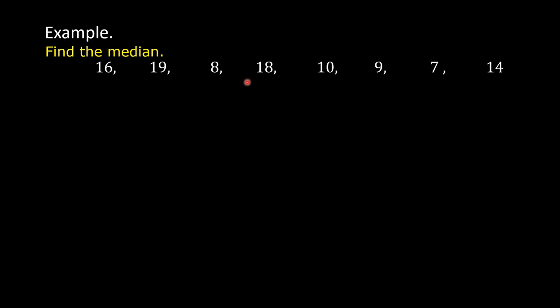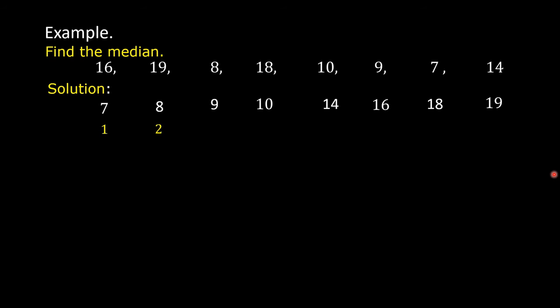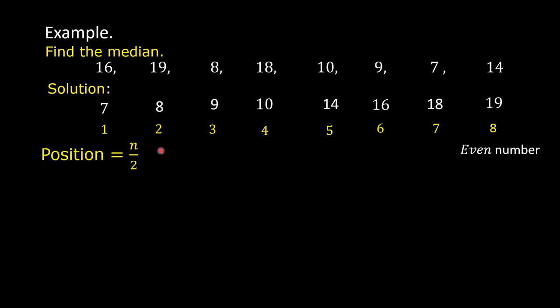Next example: find the median of 16, 19, 8, 18, 10, 9, 7, and 14. Solution: arrange the data in ascending order — 7, 8, 9, 10, 14, 16, 18, 19. Count the data: 1, 2, 3, 4, 5, 6, 7, 8. There are 8 values, which is an even number. Use the formula: position = n/2, where n = 8, so 8/2 = 4, giving the 4th position.